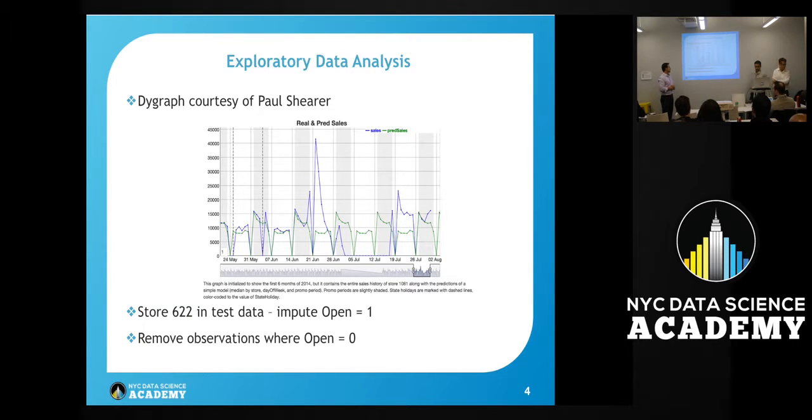Other things we found: in some stores, especially store 622, they had missing data for whatever reason. Because of deductions we made based on when stores were open, we could impute that these stores were open based on sales, customers, and other features. This missing data over an extended period also showed spikes across these times. When stores closed for an extended length, there would be a spike in sales.